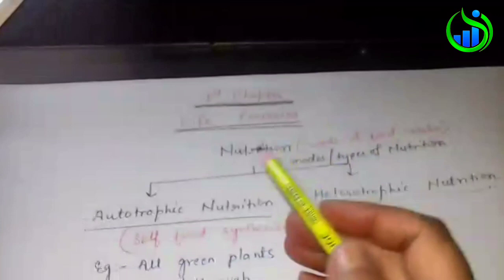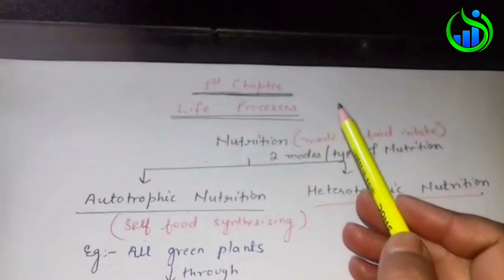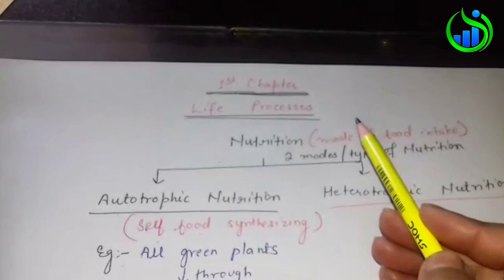In class 10, the first chapter of life process starts. Life process is all the biological activities taking place in our body which are essential for our survival. That is called as life process.